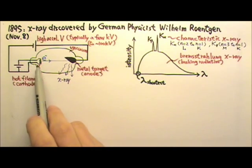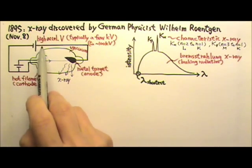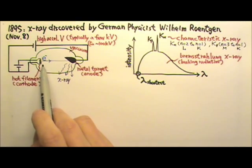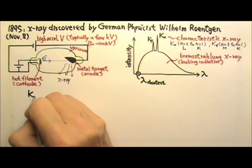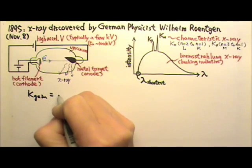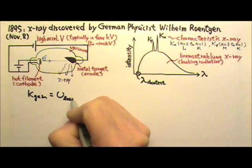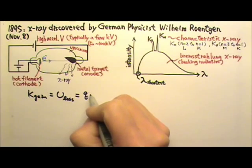When an electron is accelerated by this high voltage, the electron gains kinetic energy. The kinetic energy gain comes from the potential energy loss, and U equals QV.